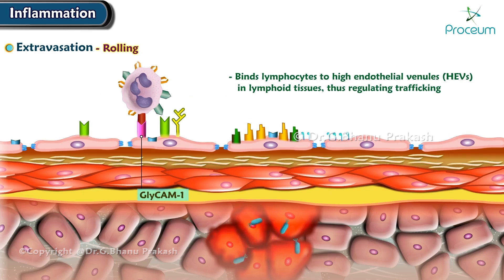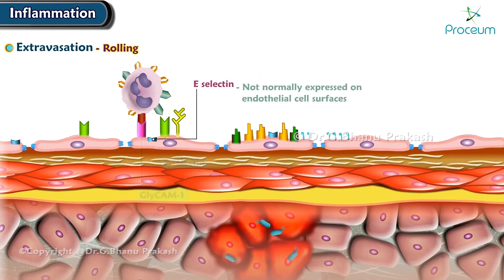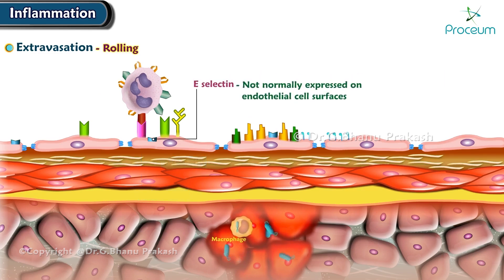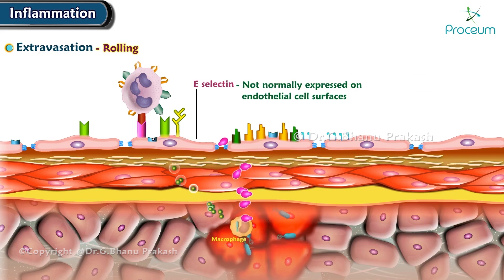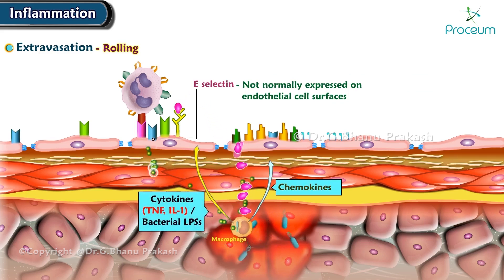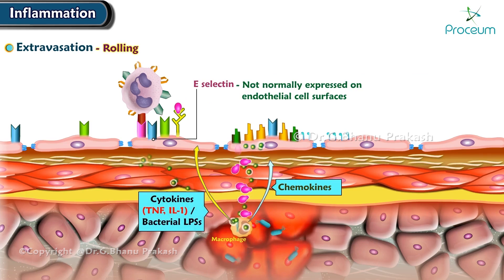E-selectin is not normally expressed on endothelial cell surfaces, but is induced by inflammatory mediators such as cytokines or bacterial lipopolysaccharides.